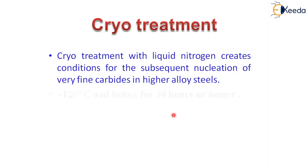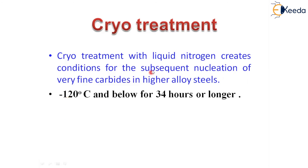With liquid nitrogen you can achieve approximately minus 120 degrees centigrade. The material has to be kept at this temperature for almost 34 hours, and sometimes longer depending on particle size and conditions. If you want to increase the number of very fine carbides, increasing the number of hours will yield more fine carbides. This temperature range and holding time defines the cryo treatment procedure.